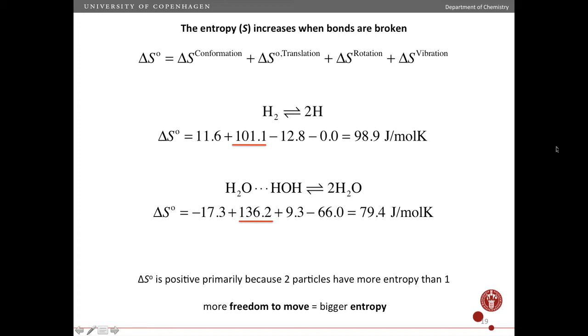So you see here, here we have two examples where you break a bond, a covalent bond or a hydrogen bond. The entropy is relatively large and positive. So the entropy of this is higher than the entropy of that. And that is mainly due to the translation.